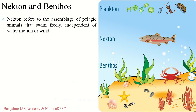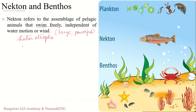The fourth type is nekton — aquatic organisms that are active swimmers. They are relatively large and powerful, able to overcome water currents. Nekton includes fish, sharks, whales, reptiles, seals, and crabs — generally heterotrophs in the aquatic ecosystem. Some organisms begin life as plankton but transition into nekton as they grow.